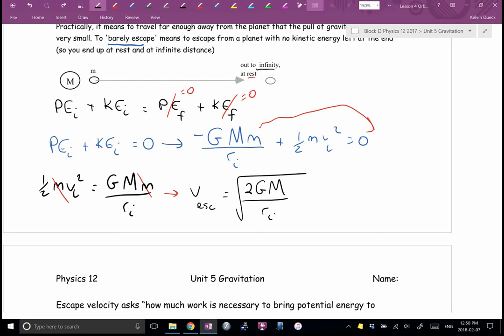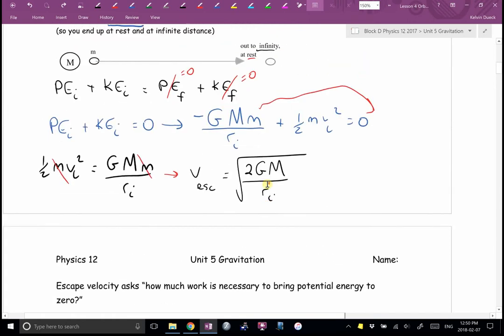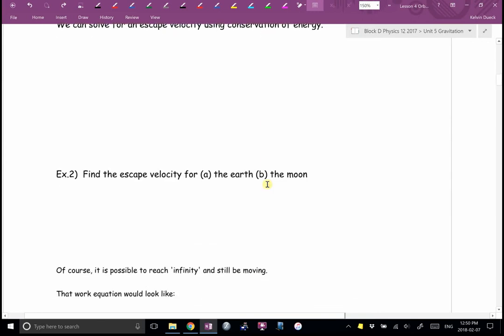I guess you can memorize it if you want to. I always derive it by saying it's conservation of energy, and I want my final energy to be zero, because I want to coast it to a stop, and no gravity out there. And then I solve. So I wrote here, escape velocity asks how much work is necessary to bring potential energy to zero. We can solve for an escape velocity using conservation of energy. Turns out we just did that up here. So, find the escape velocity for the Earth and for the Moon. I'm going to do A, the Earth, up here.